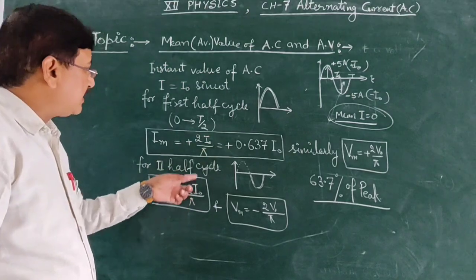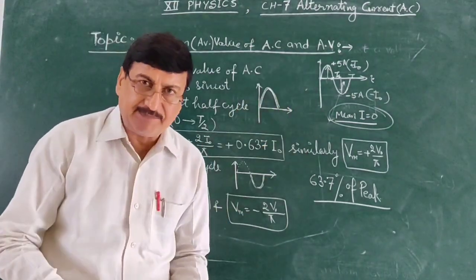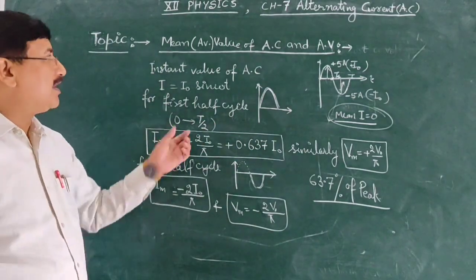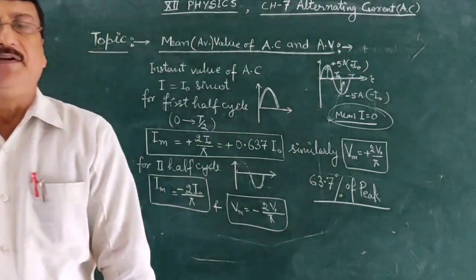So these are the complete cycle. We can see the half cycle of mean value will be fine, perfect. Next video will come. Thank you.